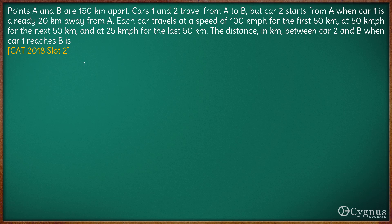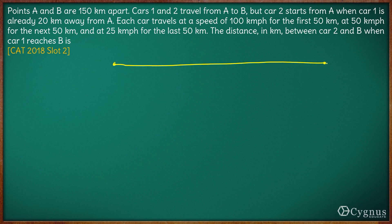Points A and B are 150 kilometers apart. Cars 1 and 2 travel from point A to B. We have point A and point B, and the distance is 150 kilometers.